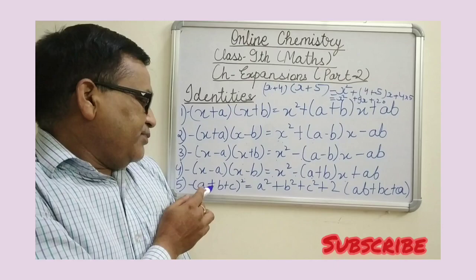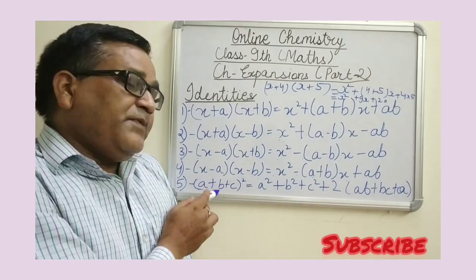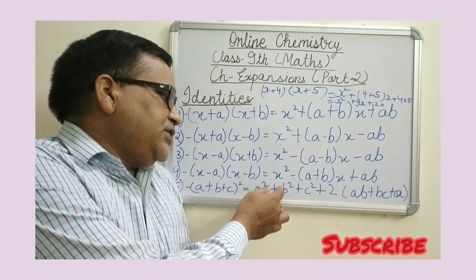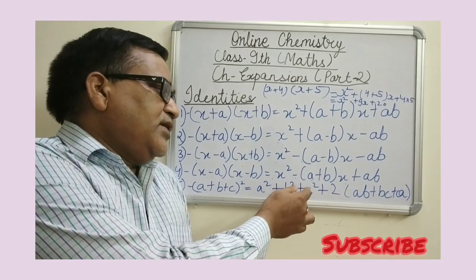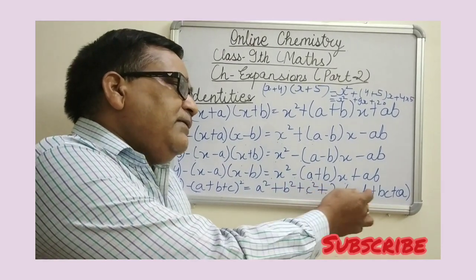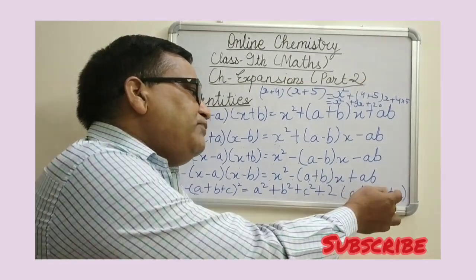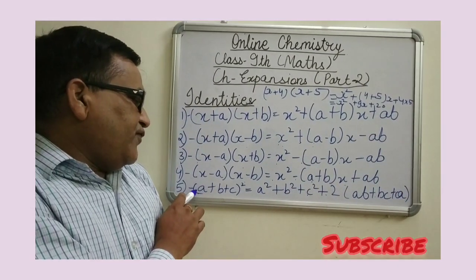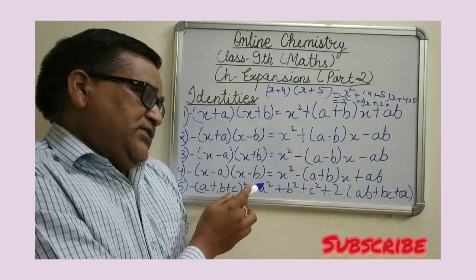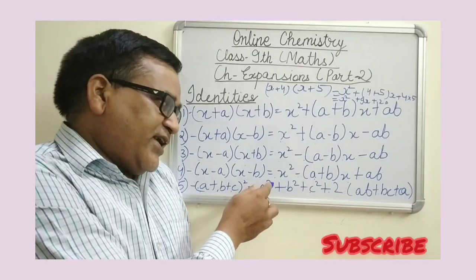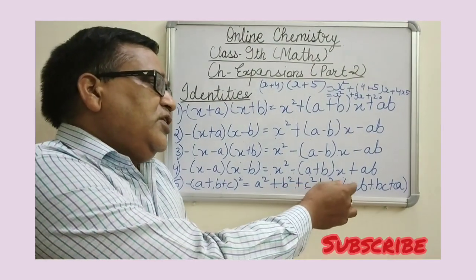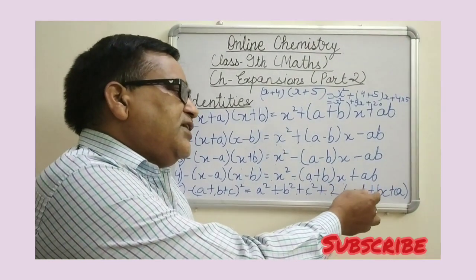The last identity is: a plus b plus c whole square is equal to a squared plus b squared plus c squared plus 2 bracket ab plus bc plus ca. That is — a is the first number, b is the second number, c is the third number. First number squared plus second number squared plus third number squared, plus 2 into first number into second number into third number.